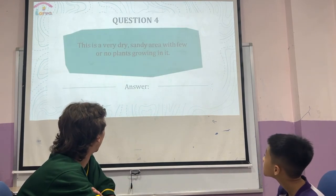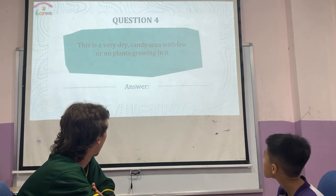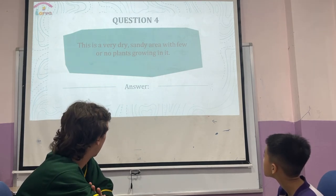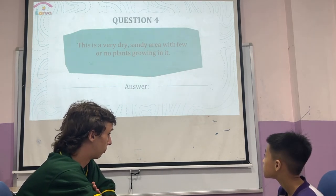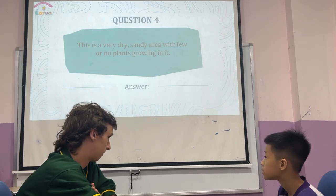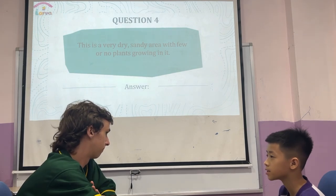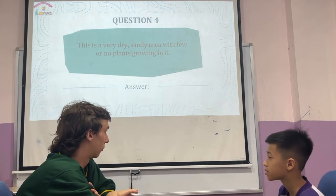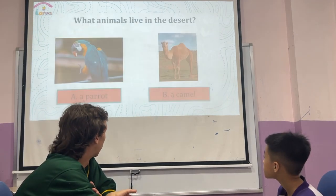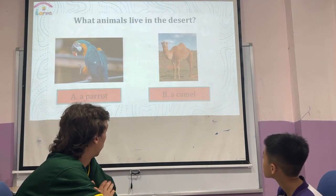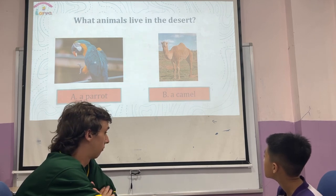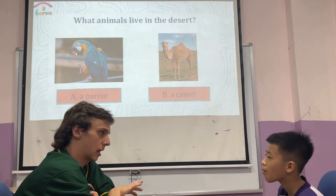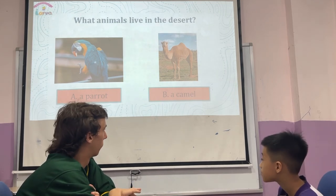Number four. This area is very dry and sandy and has no or little plants. Desert. And what animal lives in the desert? A camel. A camel. Very good.